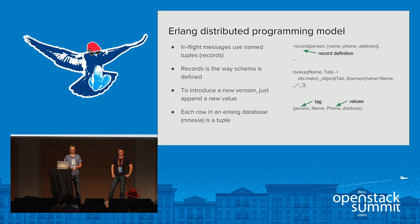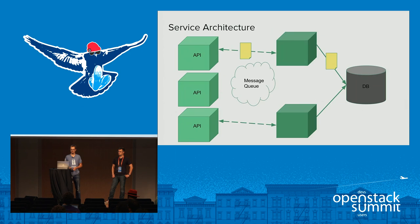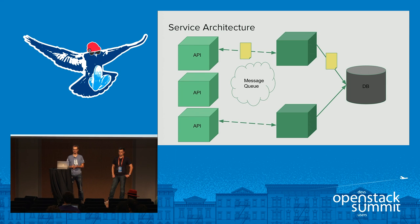This brings us to database schema definitions, because Erlang databases are also stored as tuples defined with records. When you want to change the database schema, you change the record definition. In OpenStack, we usually have two types of inter-service communication in which we have to keep data compatibility in mind: messages exchanged and stored on RabbitMQ message queue, and rows of data stored in the SQL database, which is another story.